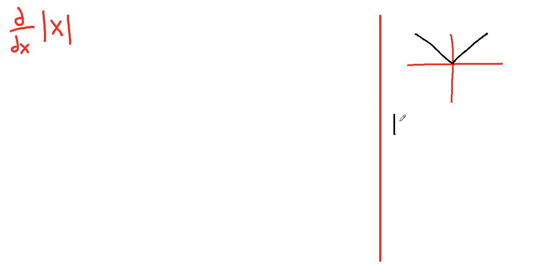We can express absolute value of x as square root of x to the second. This is equal to absolute value of x. So we can take the derivative of square root of x to the second.